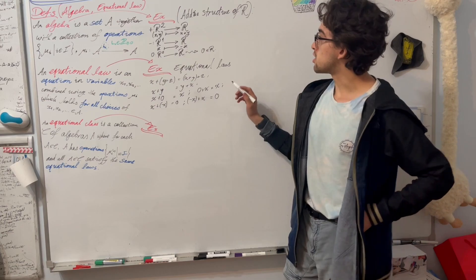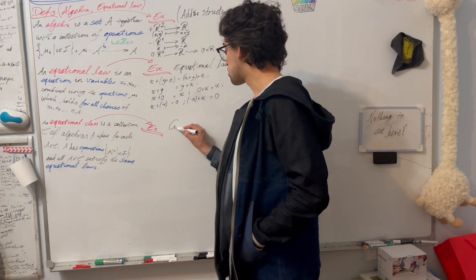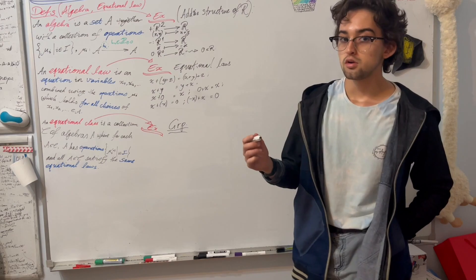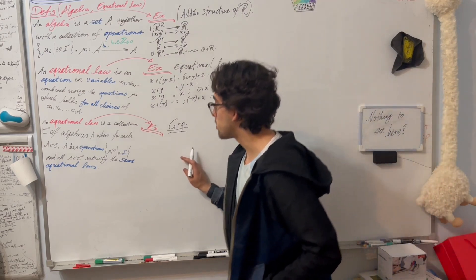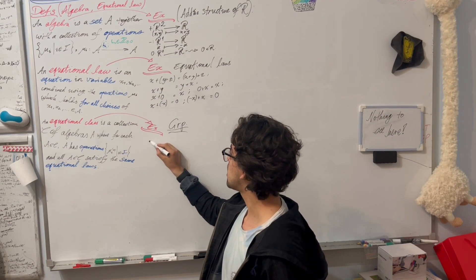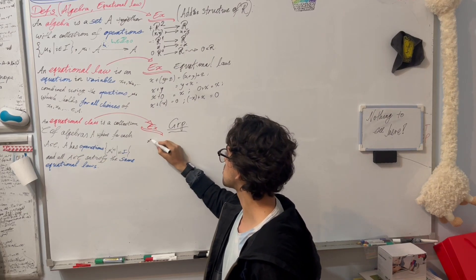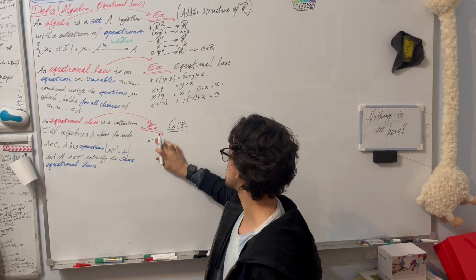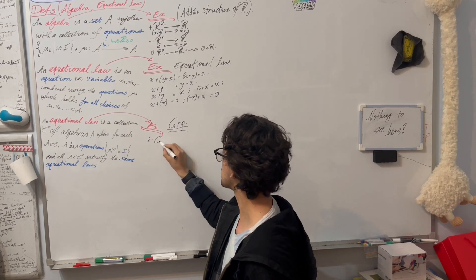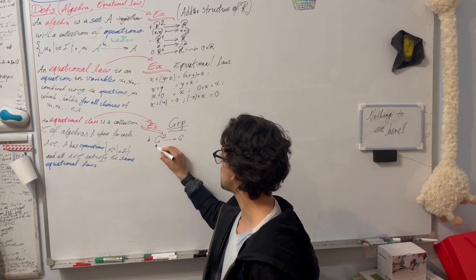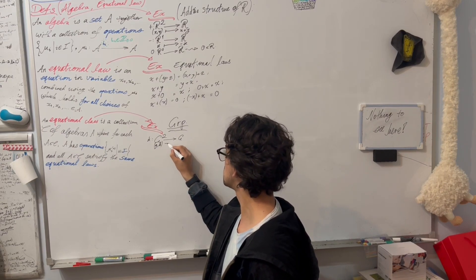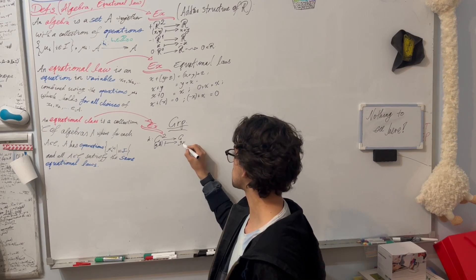So as an example, we can take groups. In a group, what we have is, we have a binary operation star, which takes, sorry not R, but our group G^2 back to G, by combining elements in some yet unspecified way.